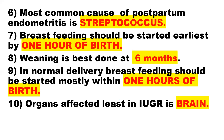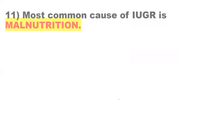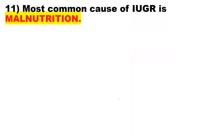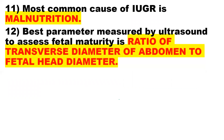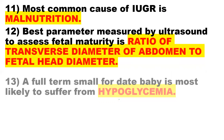Point 10: The organ affected least in IUGR is the brain. Point 11: The most common cause of IUGR is malnutrition. Point 12: The best parameter measured by ultrasound to assess fetal maturity is the ratio of the transverse diameter of the abdomen to the fetal head diameter.